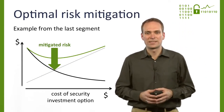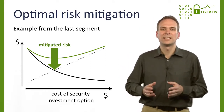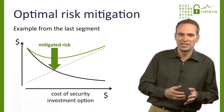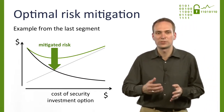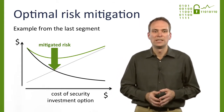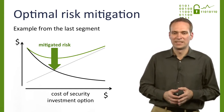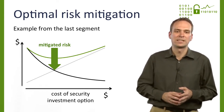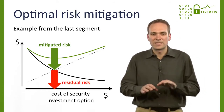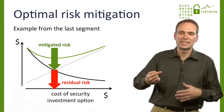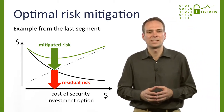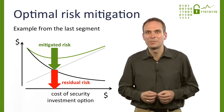Successful security investment corresponds to risk mitigation, the first instrument. Risk mitigation tries to reduce the likelihood and severity of loss events by protecting vulnerable assets with technical and organizational measures. But recall from the last segment that an optimal level of information security investment does not mitigate the risk completely, because at some point the extra cost of more protection exceeds the expected losses without that protection. As a result, there remains residual risk to be managed.